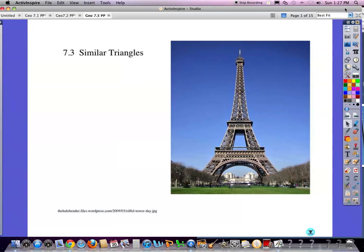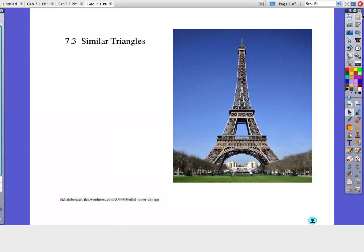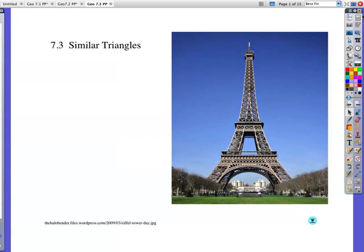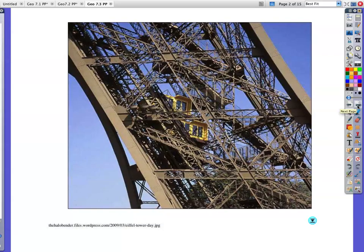Okay, we're on 7.3 similar triangles. Picture the actual tower, and if you look a little bit closer, you can see it's made up of lots and lots of little triangles in there.